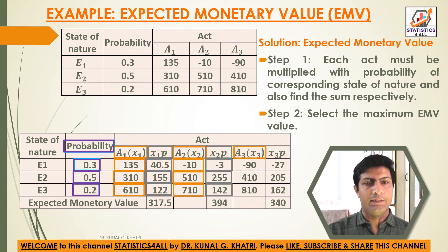For Act 3, multiply each value by its probability. Act 3 × probability: -90 × 0.3 = -27; 410 × 0.5 = 205; 810 × 0.2 = 162.